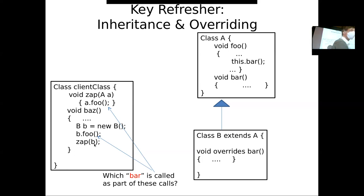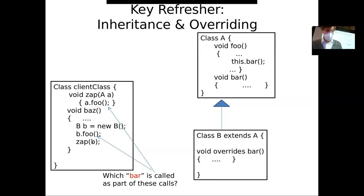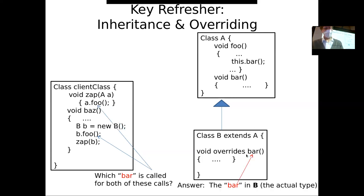Now I want to make sure you get the subtlety. We have a call to Zap here — a method in the client class. You pass it a B as if it's an A. All it knows is it's an A, and it calls A.FOO. Whose bar is called by that? When this calls A.FOO, all it knows is it's an A — it calls FOO, and that calls bar. Whose bar is called? It's B's bar — because it may only see it as an A, that's the apparent type, but its actual type is a B.